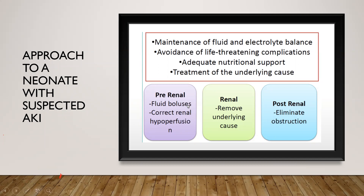For pre-renal AKI, fluid challenges are definitely used. In a baby who is not grossly volume overloaded or in CHF, one can try a 10 ml/kg bolus, aiming for a urine output of 1 ml/kg. A Lasix challenge can also be tried if the baby is hemodynamically stable and not septic. Lasix infusion is considered better than bolus doses as it decreases the total drug used and provides a more sustained response. Lasix should be avoided if it is not producing any response, as continuing it in the absence of urine output would only cause nephrotoxicity.